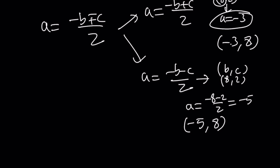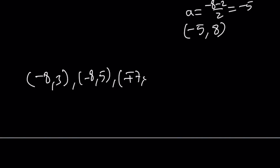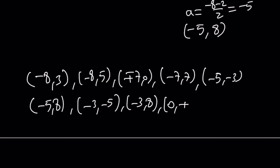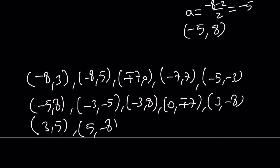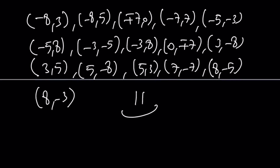There are many ordered pairs that work. Here is the full list of solutions: negative 8 comma 3, negative 8 comma 5, plus or minus 7 comma 0, negative 7 comma 7, negative 5 comma negative 3, negative 5 comma 8, negative 3 comma negative 5, negative 3 comma 8, 0 comma plus or minus 7, 3 comma negative 8, 3 comma 5, 5 comma negative 8, 5 comma 3, 7 comma negative 7, 8 comma negative 5, and 8 comma negative 3. Note that a and b are interchangeable, so we switch them as needed.